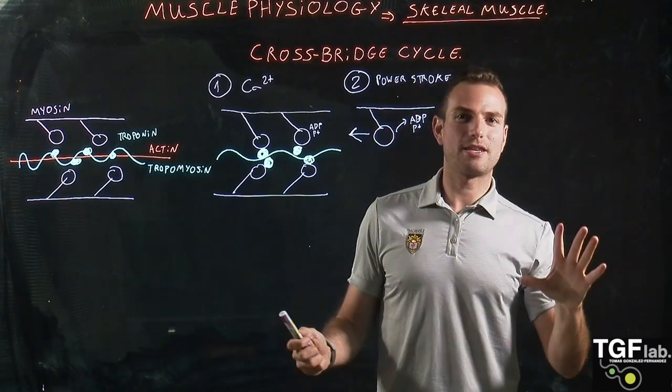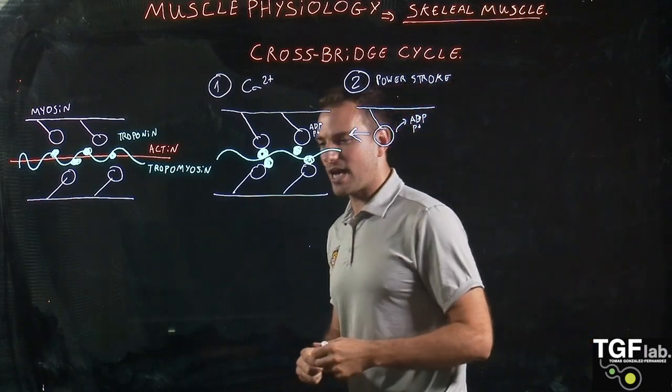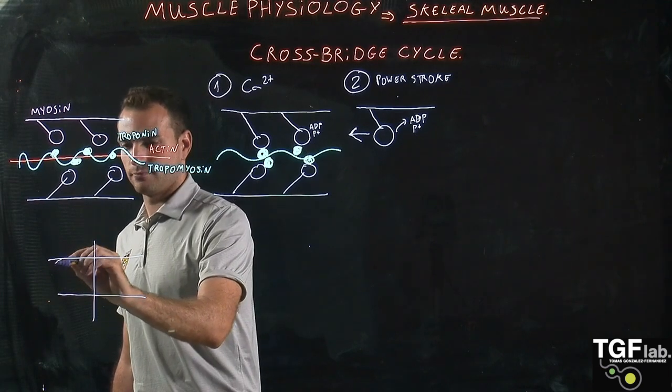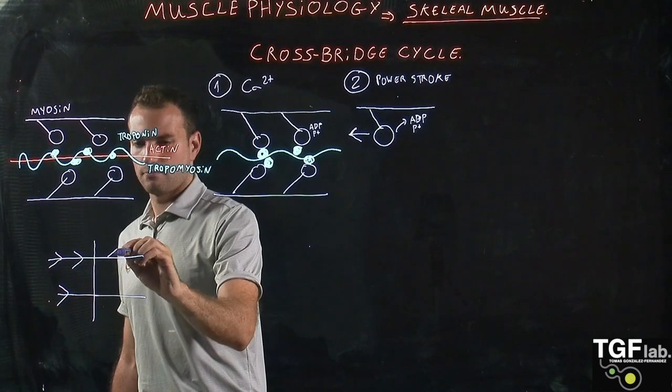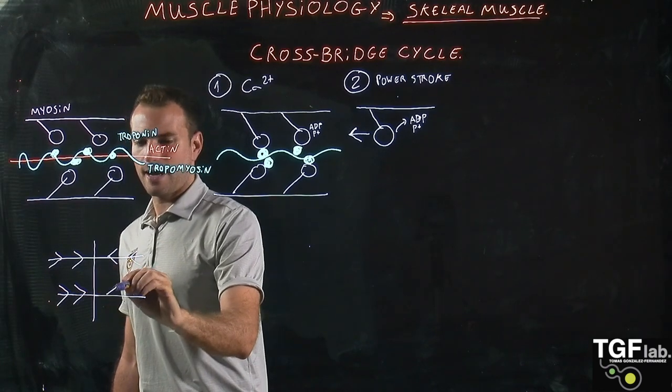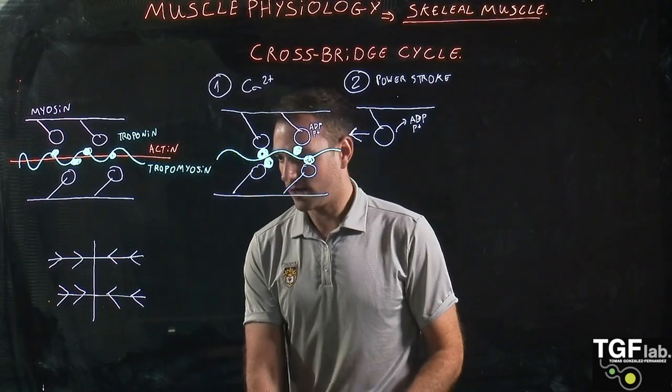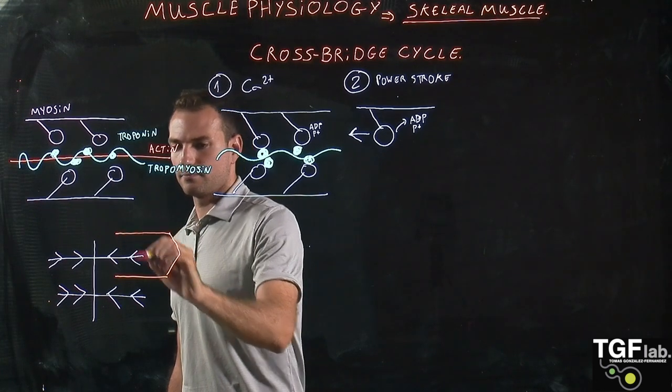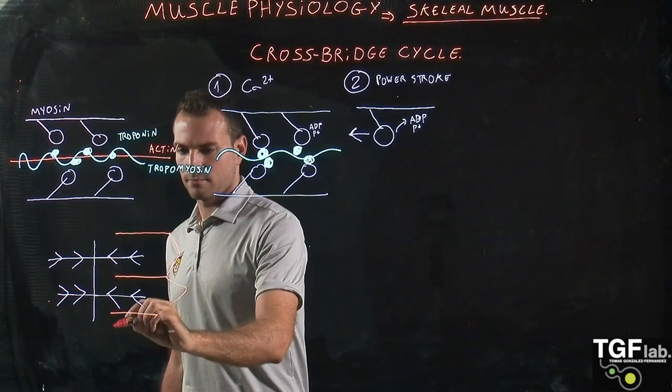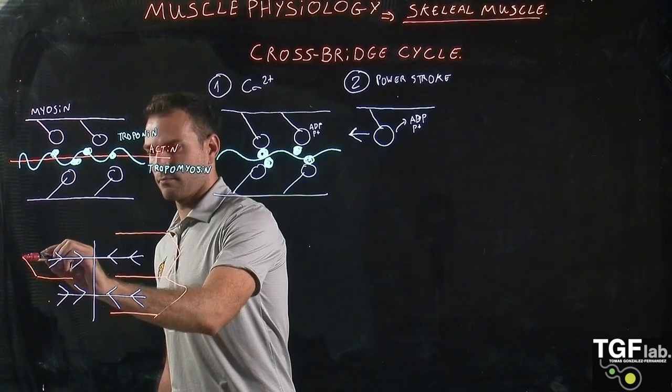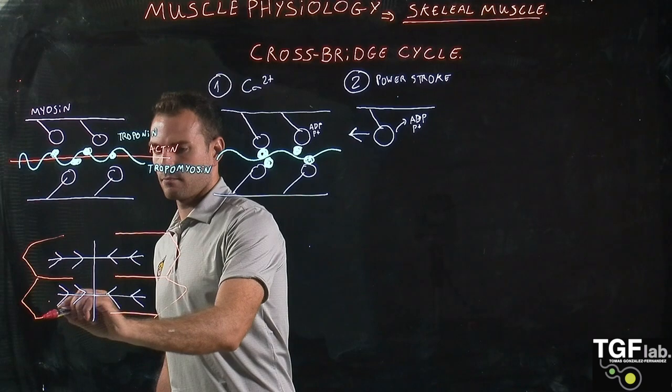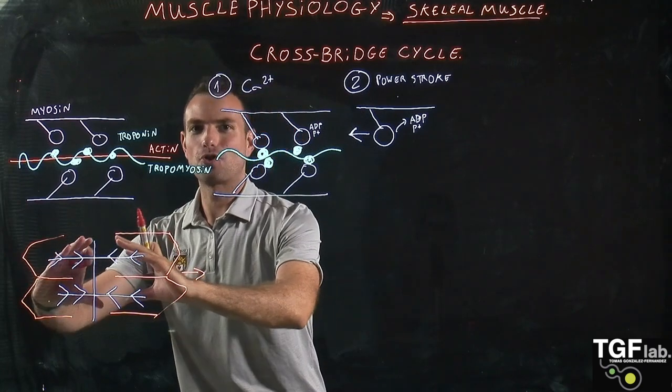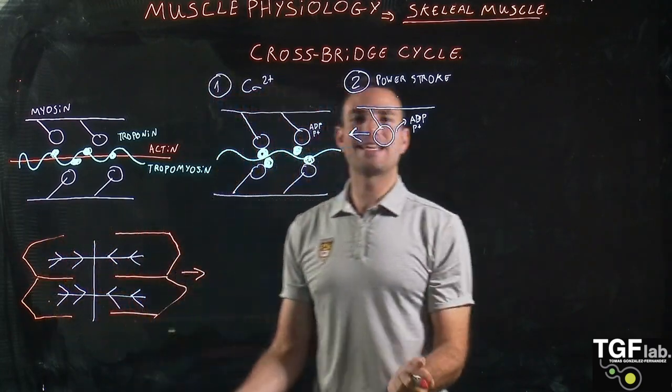So in order to explain it with the sarcomere example a bit better so we can all understand, so here this will be the relaxed sarcomere. So we have the myosin with the heads. And here we also have the actin. So what is going to happen here with the power stroke is that the actin is going to come closer to the M band in the sarcomere. And that's going to generate a contraction.